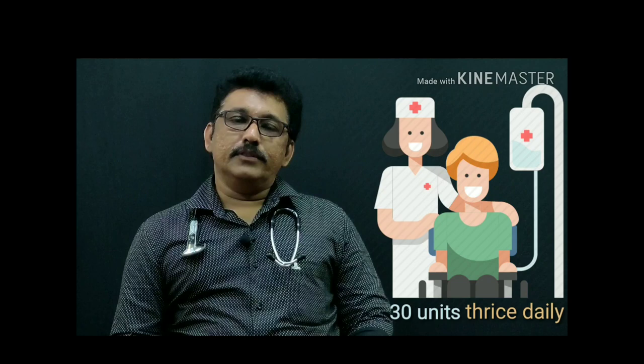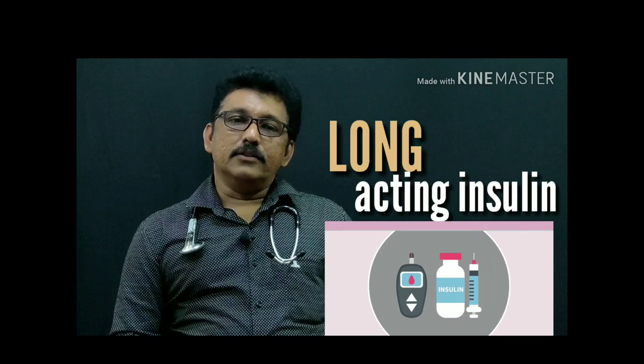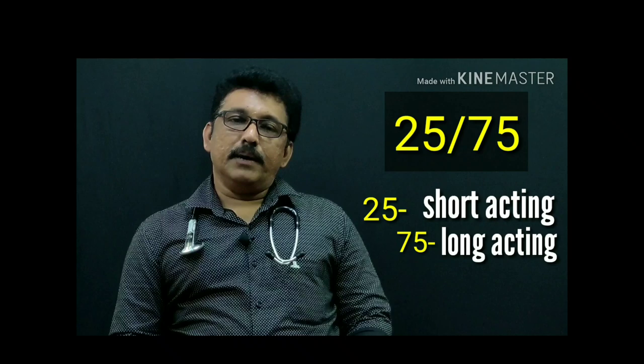Long-acting insulin comes in different preparations: 25/75 means 25% short-acting and 75% long-acting; 30/70 means 30% short-acting and 70% long-acting; and 50/50 means 50% short-acting and 50% long-acting.